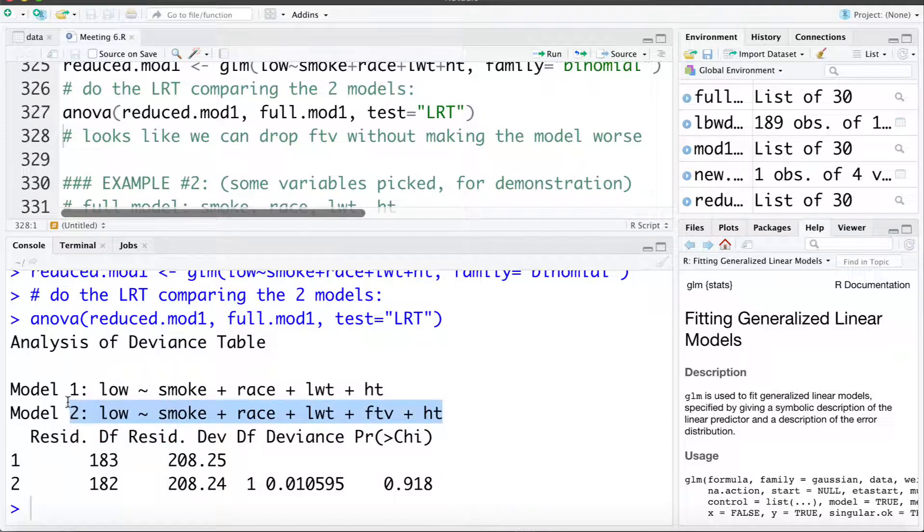We can see here, similar to the partial F test, it gives us the two models that we're comparing. We can see the difference is the addition of FTV here or the removal of it in model one. We can see the residual deviance for the full and reduced model. As noted earlier, the residual deviance is very similar conceptually to the sum of squared error or residual sum of squares. This here is the test statistic, the change in the residual deviance. We can see it's quite tiny and here is the p-value for the test.